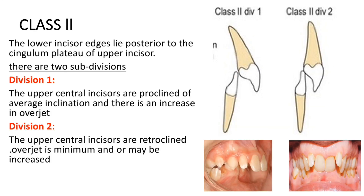In Class 2 incisor relationship, the lower incisor edges lie posterior to the cingulum plateau of the upper incisors. As you can see in the picture, the lower incisor edge is posterior to the cingulum plateau of the upper incisors. Class 2 incisor relationship is divided into two subdivisions: Division 1 and Division 2.